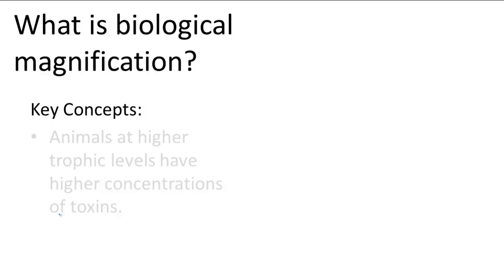Sometimes, organisms in lower trophic levels will consume toxins from their environment with their diet. These organisms usually only have a small concentration of the toxins, so it doesn't really affect their health, but organisms in higher trophic levels could be in trouble.